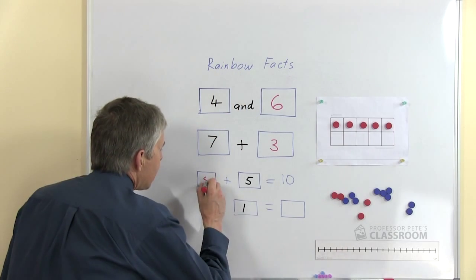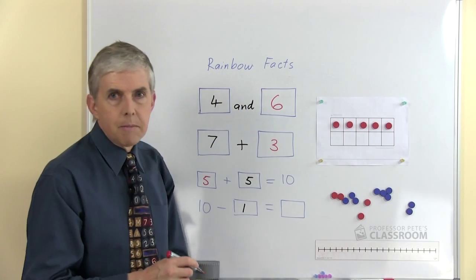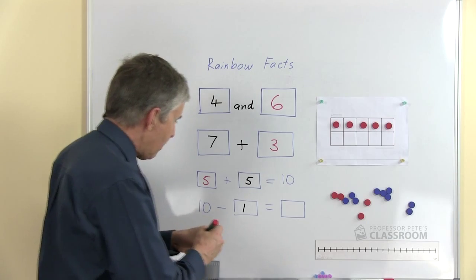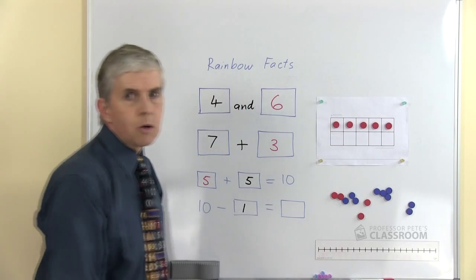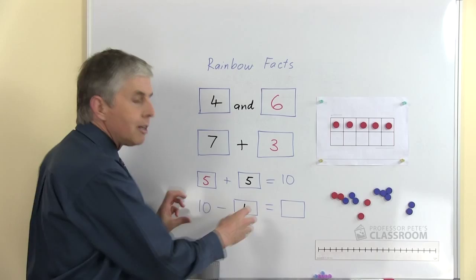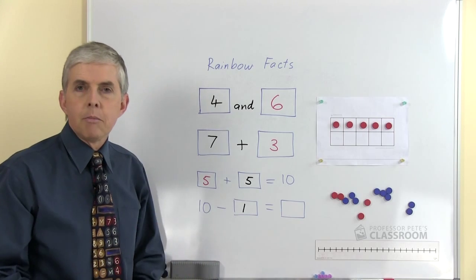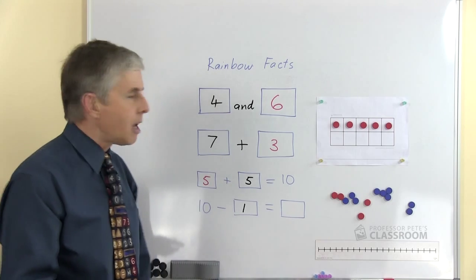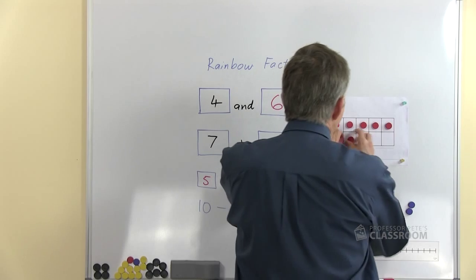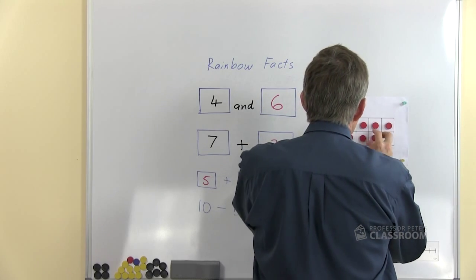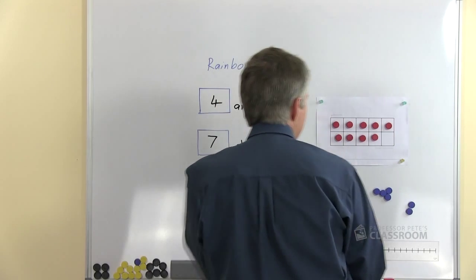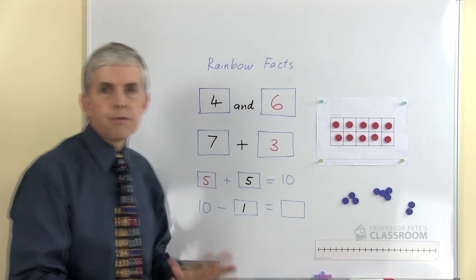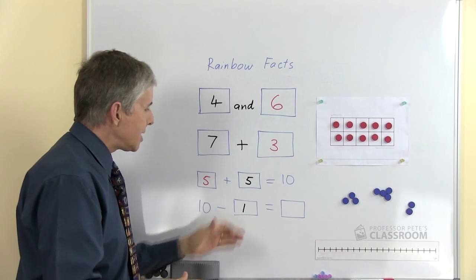Last one, this is a takeaway question. If we start with ten and take away a certain number, then of course we're using another rainbow fact. So let me fill this up with ten, one more red one. So there's my ten frame full of ten, and it says ten take away one.